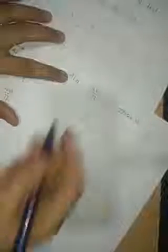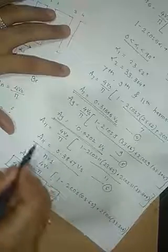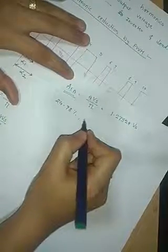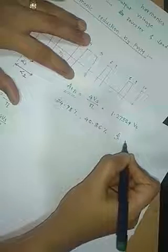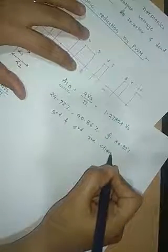In comparison with the fundamental component of unmodulated voltage, the amplitudes of the 7th, 9th, and 11th harmonic components are 24.78%, 40.86%, and 30.37% respectively. The 3rd and 5th harmonic components are eliminated from the inverter output voltage.